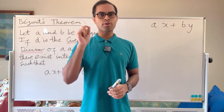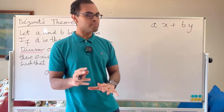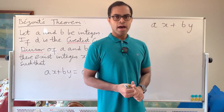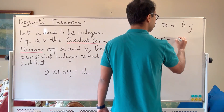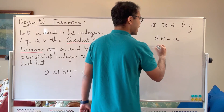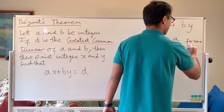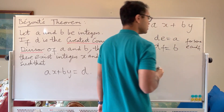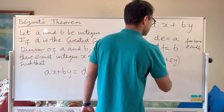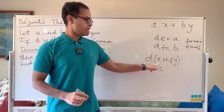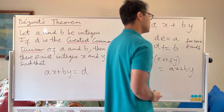We want to show that we can find an ax plus by that equals exactly d — not 2d or 3d, but exactly d. The rigorous argument: since d divides a, we write a equals dE for some integer E, and b equals dF for some integer F. Then ax plus by equals d times Ex plus Fy, which is a multiple of d. So ax plus by is always a multiple of d.